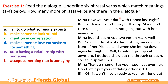Now let's take a look at A: fail to do what someone expects — không thể làm được điều mà người khác cho rằng bạn có thể làm được. Cụm động từ tương đương là 'let me down'. B: make someone look stupid — làm cho ai đó trông có vẻ ngu ngốc, ngớ ngẩn — đó là 'putting me down'. C: mention in conversation — nhắc đến ai đó trong cuộc nói chuyện — đó là 'brought dad up'.